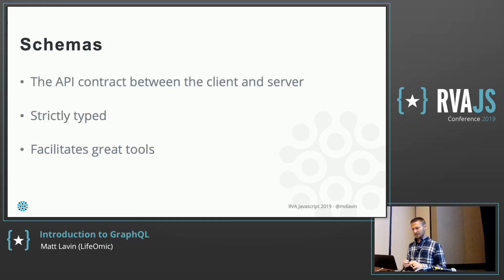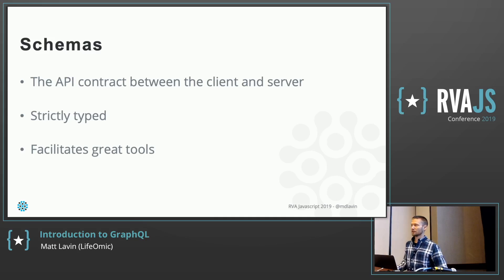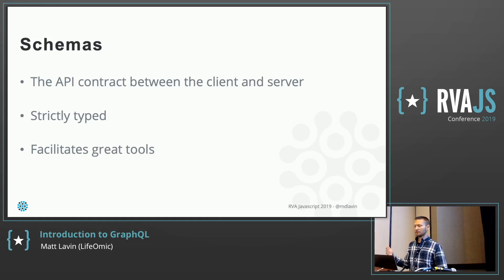The schema is the API contract between the client and the server. You get to decide on the schema once, and then the client can implement its side and the server can implement its side, and everything will just work first try when you deploy it. It's strictly typed — all attributes are strings, ints, numbers — and that typing, like all typing, facilitates good tools, everything we've come to like in TypeScript.